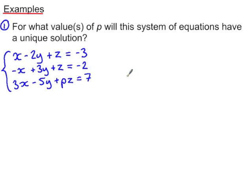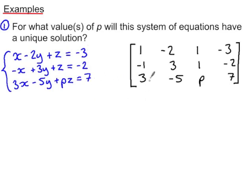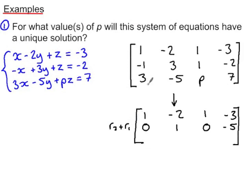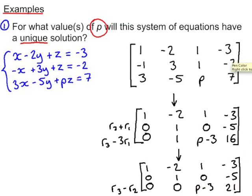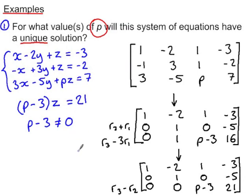Working through a couple of examples to finish — I'll start by writing the system in matrix form, then to reduce to row echelon form I'll replace row two with row two plus row one, and row three with row three take three lots of row one. We're not quite in row echelon form, so I'll replace row three with row three take row two. The question asks for what value of p will this system have a unique solution. Looking at the third row, we have p take three, times z, equals twenty-one. As long as p take three is not equal to zero, the system has a unique solution — so p cannot equal three.